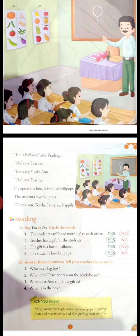He opens the box — aur wo box ko open karte hain, kholte hain. It is full of lollipops — aur wo lollipops se full rehta hai, bhar a hua rehta hai. The students love lollipops — aur students jo hain, wo lollipops kaafi pasand karte hain. 'Thank you teacher,' they say happily — aur wo saare log khushi khushi teacher ko thank you kehte hain.